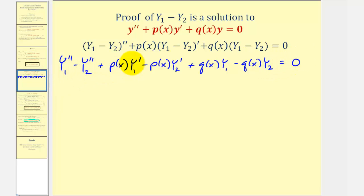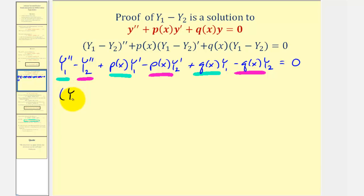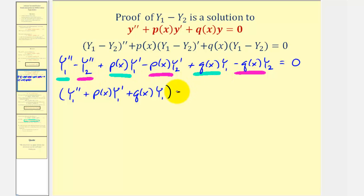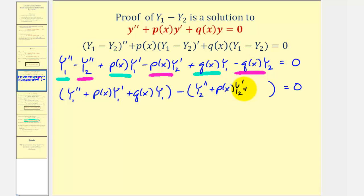Now we'll group the sub one terms and sub two terms. The sub one terms are all positive, and the sub two terms are all subtraction. So we'll group the Y sub one terms first: Y sub one double prime plus p of x times Y sub one prime plus q of x times Y sub one. Because the remaining terms are subtraction, we subtract the quantity — which means all terms inside the parentheses will now be positive — giving us Y sub two double prime plus p of x times Y sub two prime plus q of x times Y sub two.